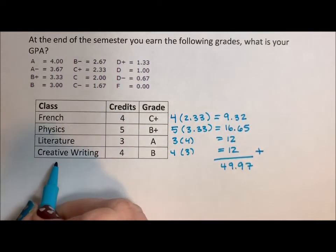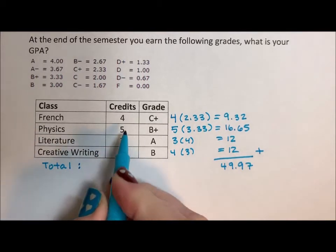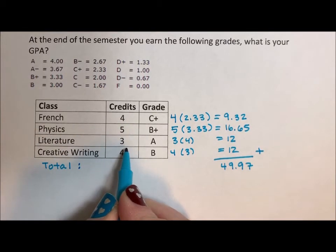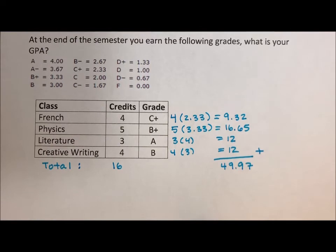Now, total credits. 4 plus 5 plus 3 plus 4 means you took 16 credits this semester.